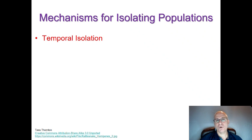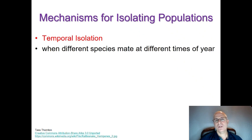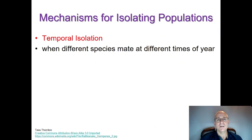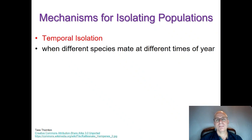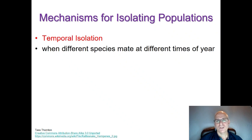Temporal isolation — temporal means time. Temporal isolation is when different species mate at different times of year. If we look at some species of frogs in our area — bullfrogs, wood frogs, and leopard frogs, which all belong to the same genus and share a somewhat recent common ancestor — because they reproduce at slightly different times of the year, the chances of a male from one species mating with a female of a different species is pretty low. They are essentially isolated from one another because they mate at different times.